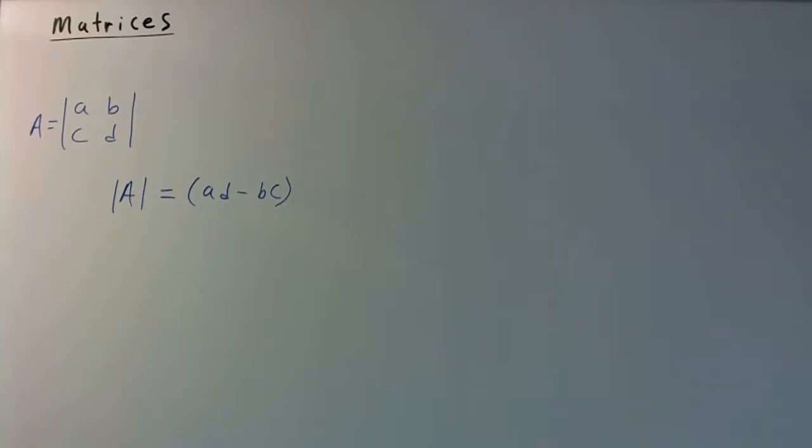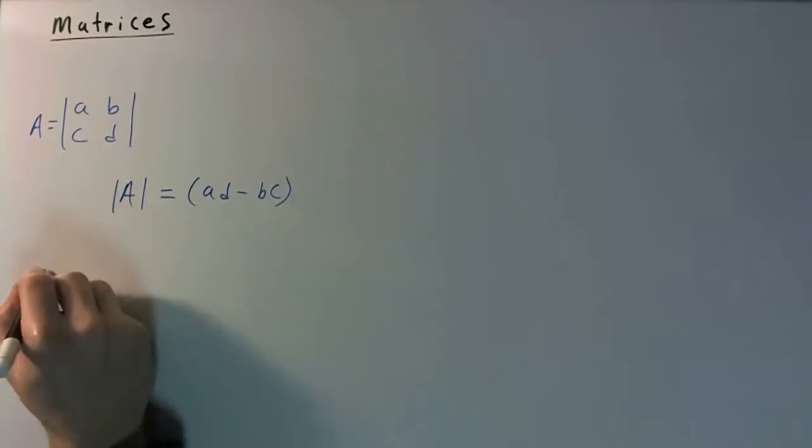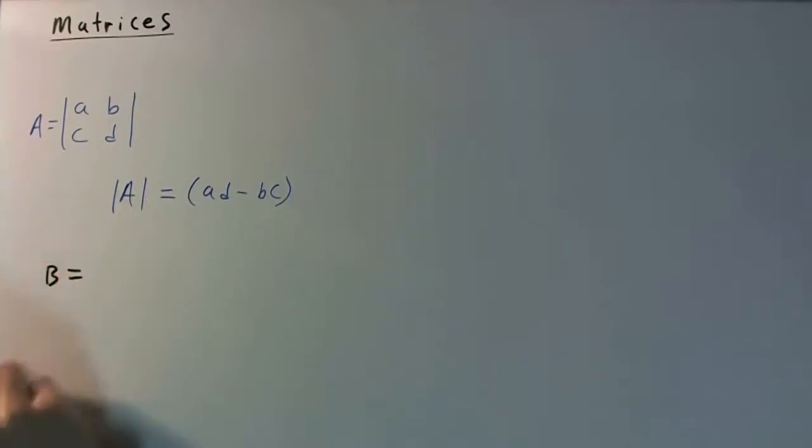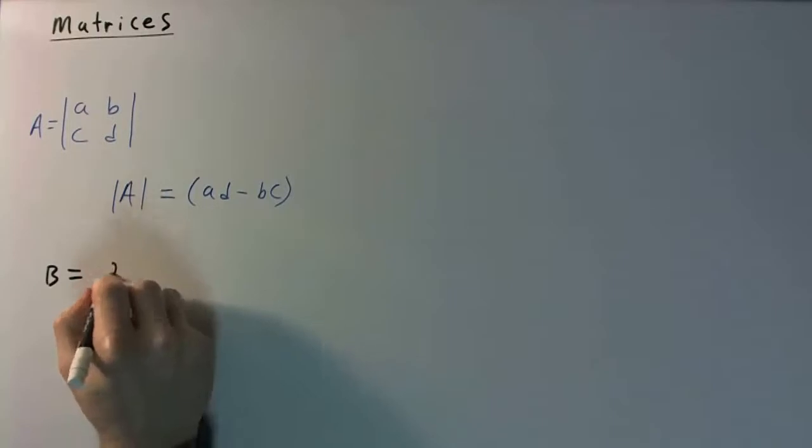So let's do a quick example. Say, for example, we had a matrix B, and so that's going to be 2, 3, 4, 5, right?